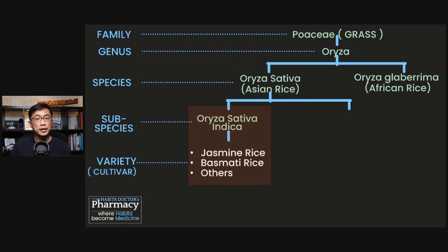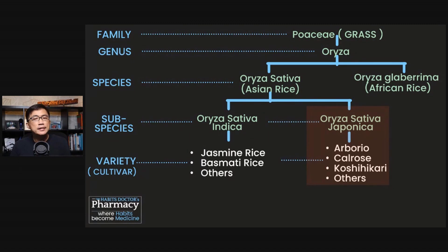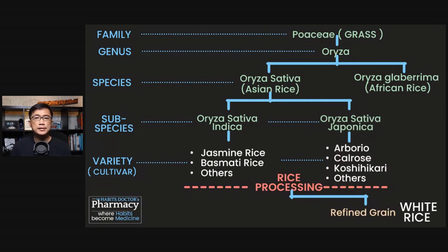The other common subspecies of rice is the Oryza sativa japonica. Japonica rice are often short grain, rounder, and thicker than the indica rice. Examples of japonica rice are the Arborio rice, often used in risotto, or the Koshihikari rice, often used in making sushi.